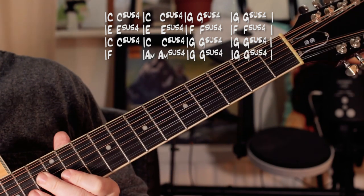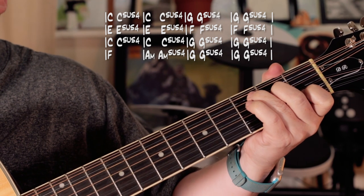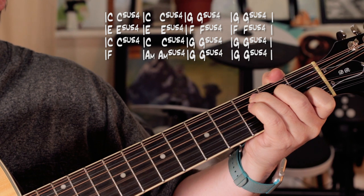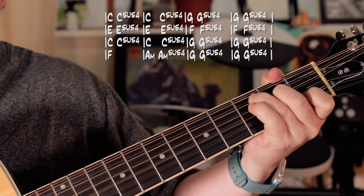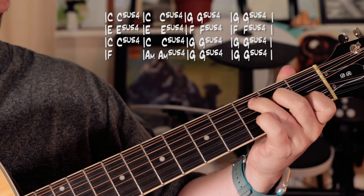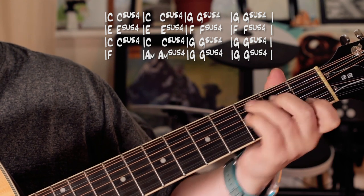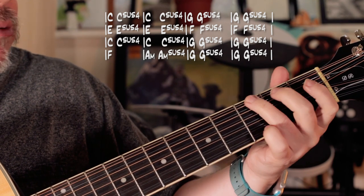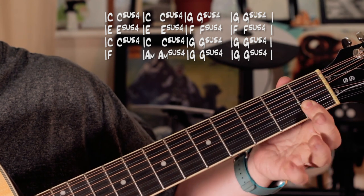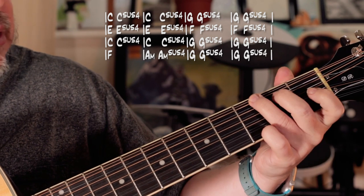Then into the chorus, the chords I'm playing there are two bars of C and Csus4, one two three four with that rhythm. Then I'm going to a G and then using my first finger to do a Gsus4 on the first fret B string.